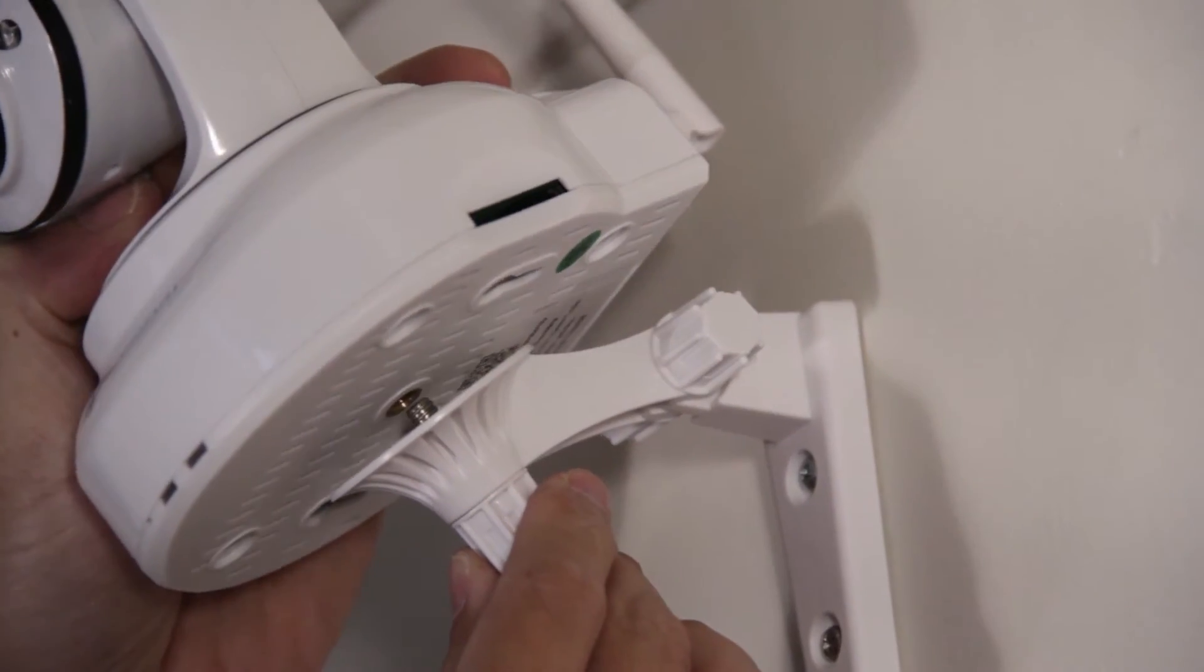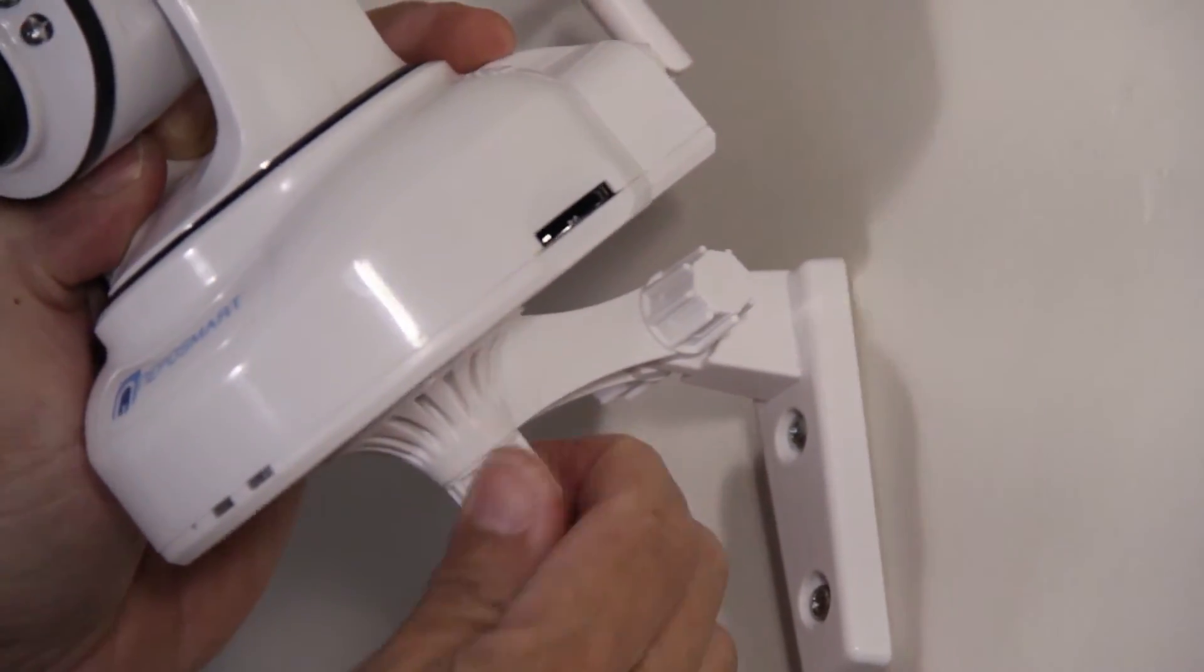Now to mount NepoSmart, align the screw hole of the unit to the screw of the bracket and tighten.